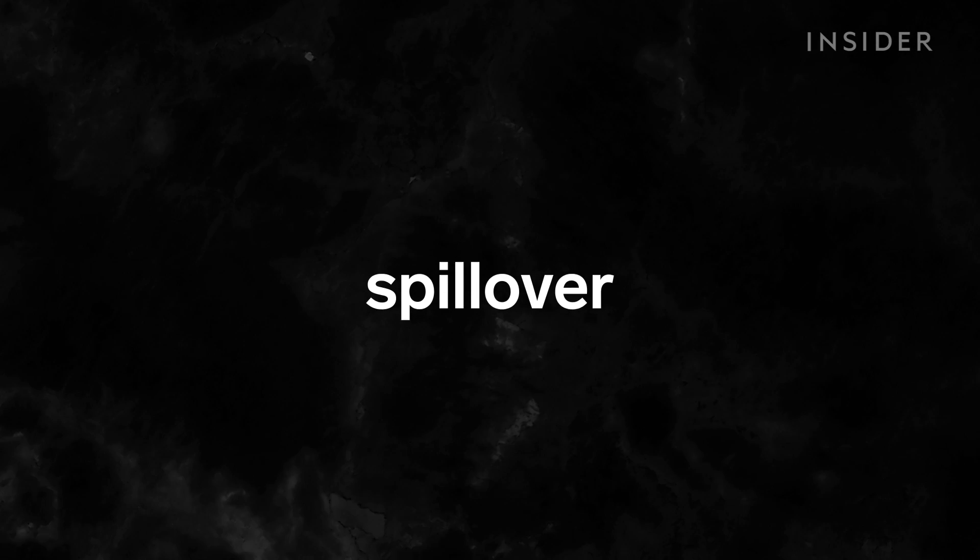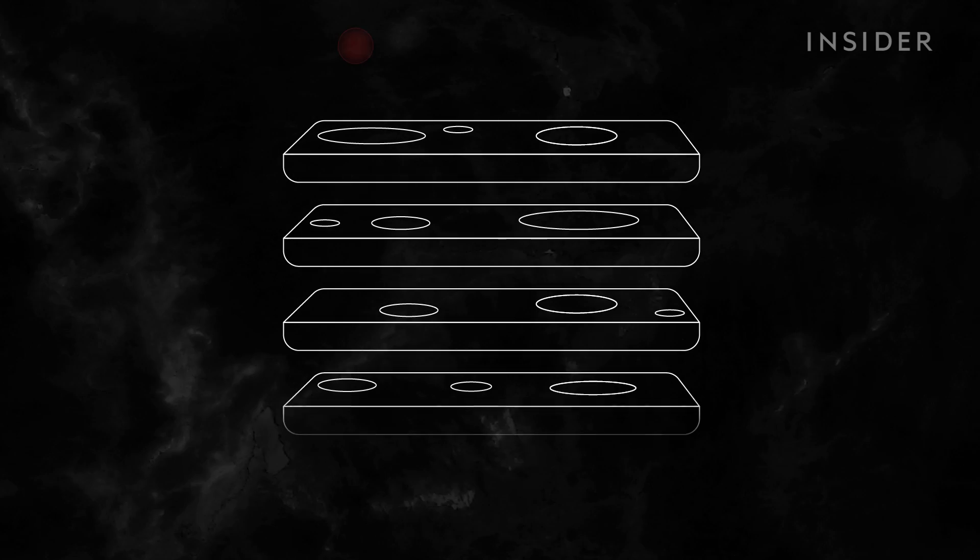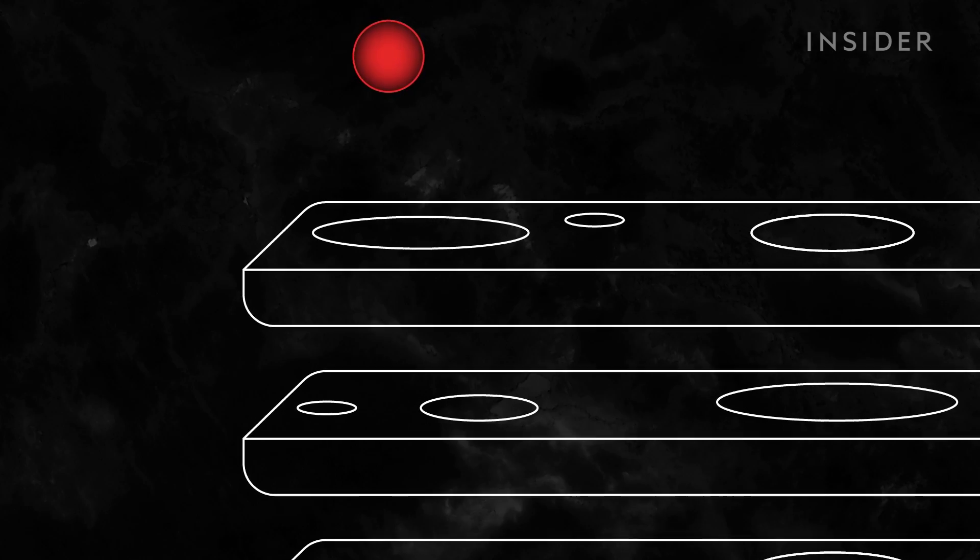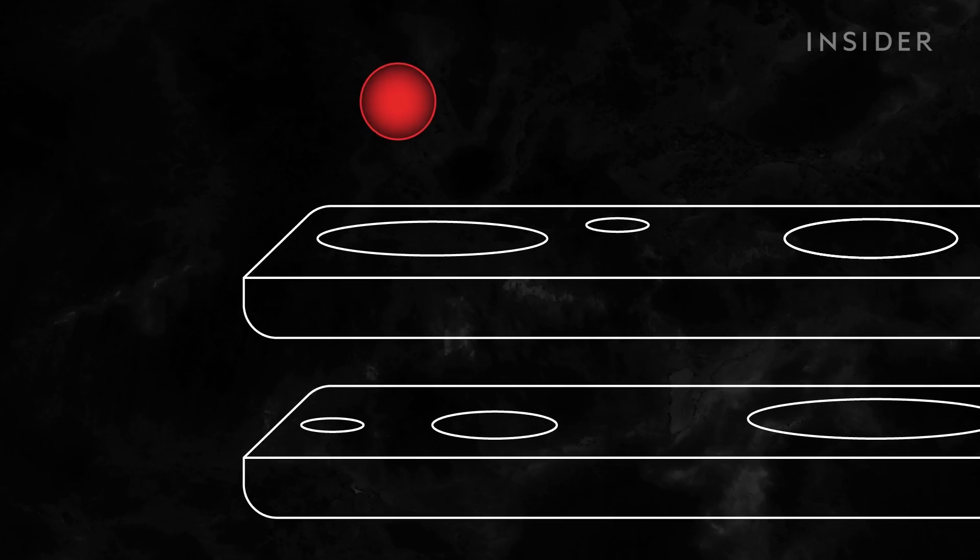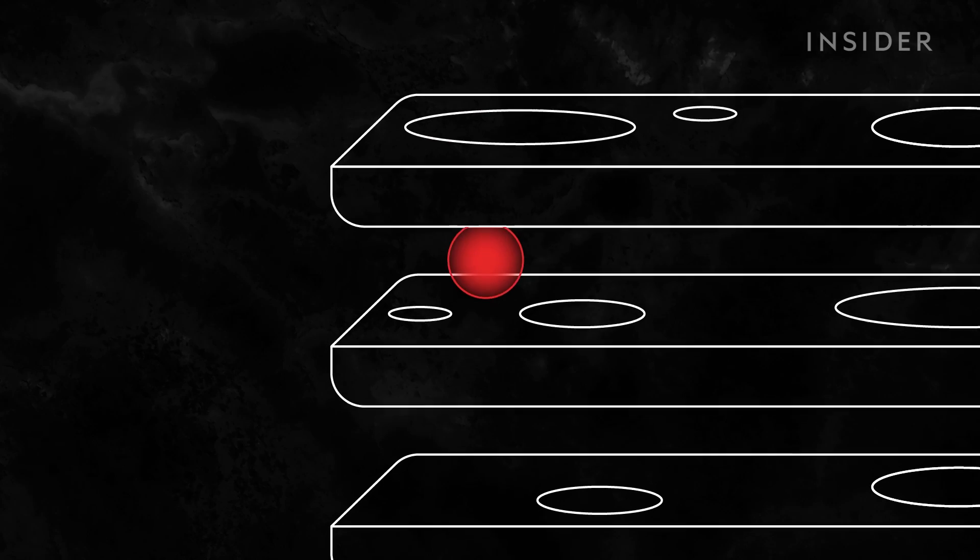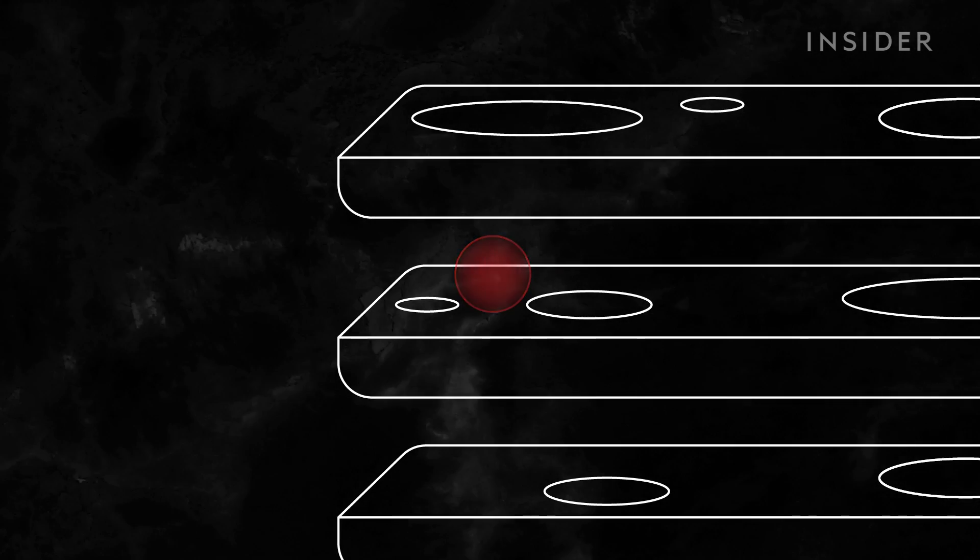It's called spillover, and there are a series of barriers that a virus must navigate for that to happen. If it's held up by even one of these, it can be stopped in its tracks. Simplified, they represent two things.